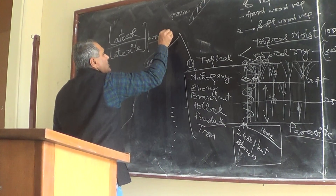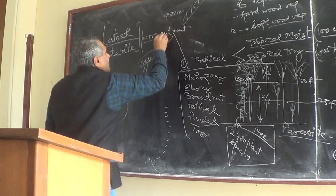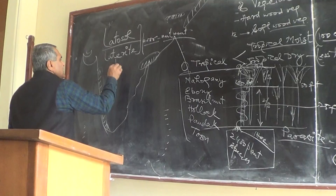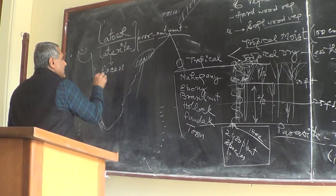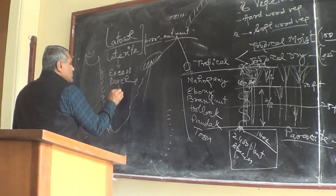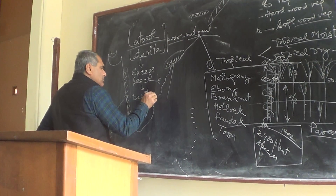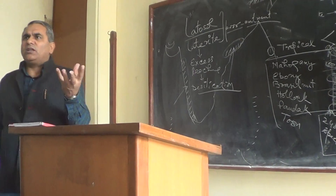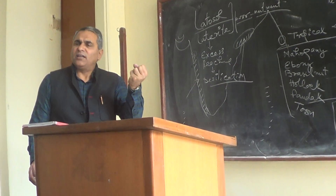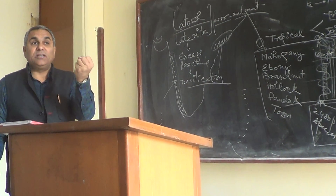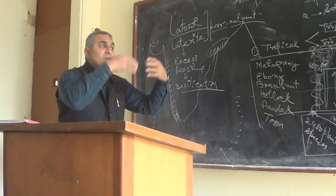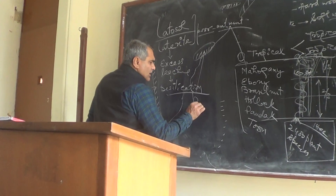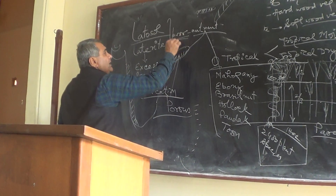It is a poor nutrient soil. Wherever we have excess leaching, there is desilication. Desilication means silica — the most important component of the soil for retaining nutrients — is washed out. So this is a highly porous soil, and that's why this soil is ultimately a poor soil.